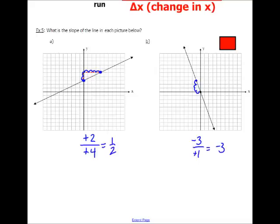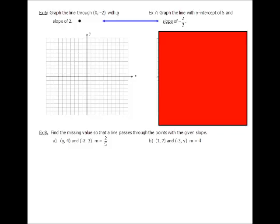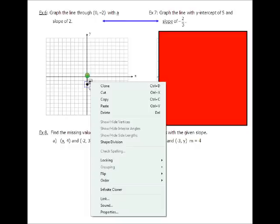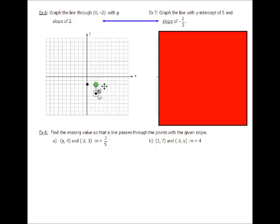All right. So let's take a look at a little bit of graphing with points and slopes. The first one, example 6, graph the line through 0, negative 2 with a slope of 2. So the first thing I'm going to do is I'm going to plot the point 0, negative 2. 0, negative 2 is here, and what I want to do is I want a slope of 2. Well, what does a slope of 2 mean? A slope of 2 means I want to rise 2, run 1. So I'm going to start here, rise 2, run 1. And then I can do that again. I can rise 2, run 1. Or I could rise 4, run 2. Make sense?